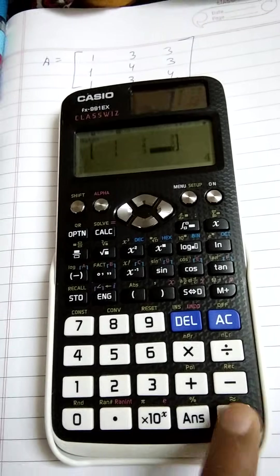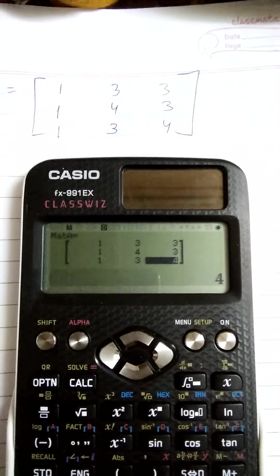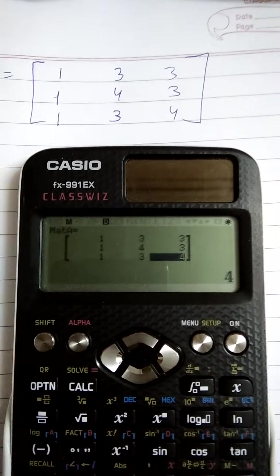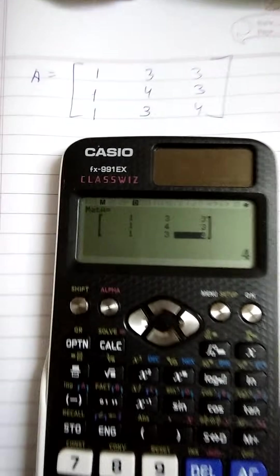As soon as you enter the matrix, please go through the matrix entered and which we have in the question, so that it gets clear that the matrix we have entered is correct. It's 1, 3, 3, 1, 4, 3, and 1, 3, 4. Yes it's correct.